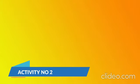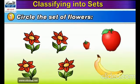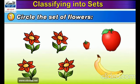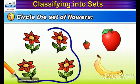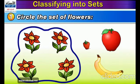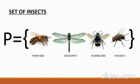Activity Number 2: in the given picture, can you see the lovely drawings? We have some flowers, an apple, a strawberry, and a banana. Now let's circle the set of flowers — you have to draw a circle around all the flowers together. You can use a pencil to draw a circle around the flowers only. In this way you have a set of flowers. In this picture you can also see the set of insects. Students, what did you learn from these activities? You learned how to make sets.